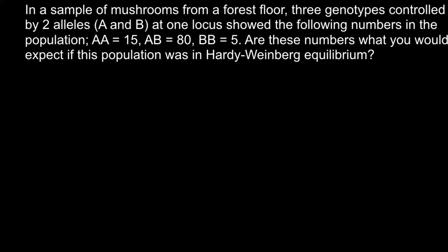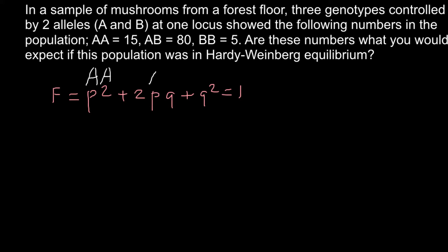Here is the Hardy-Weinberg formula. F stands for the frequency of the different genotypes, and we can get three different genotypes with two alleles. The formula is: p² + 2pq + q² = 1. Here p² stands for the genotype AA, 2pq stands for the heterozygous genotype AB, and q² stands for the homozygous genotype BB.